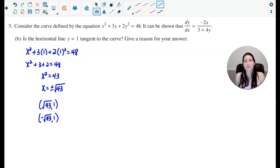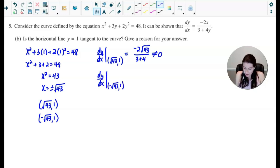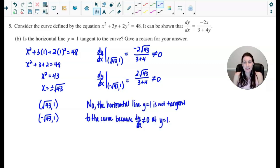So now what I want to do is I want to evaluate the derivative at both of those points and see if the derivative is equal to 0. So first, let's find what dy dx is evaluated at positive root 43, 1. And we can see that the numerator would become negative 2 root 43, and the denominator would be 3 plus 4 or 7. Now, I notice right off the bat that that slope is not equal to 0. And I think I can already see likewise at this point negative root 43, 1. Plugging that in, that'd be negative 2 times negative square root of 43, which comes out to be positive, and then again 3 plus 4. So once again, that slope is not equal to 0. So when it says give a reason for your answer, my reason would be no, the horizontal line y equals 1 is not tangent to the curve because dy dx does not equal 0 at y equals 1.